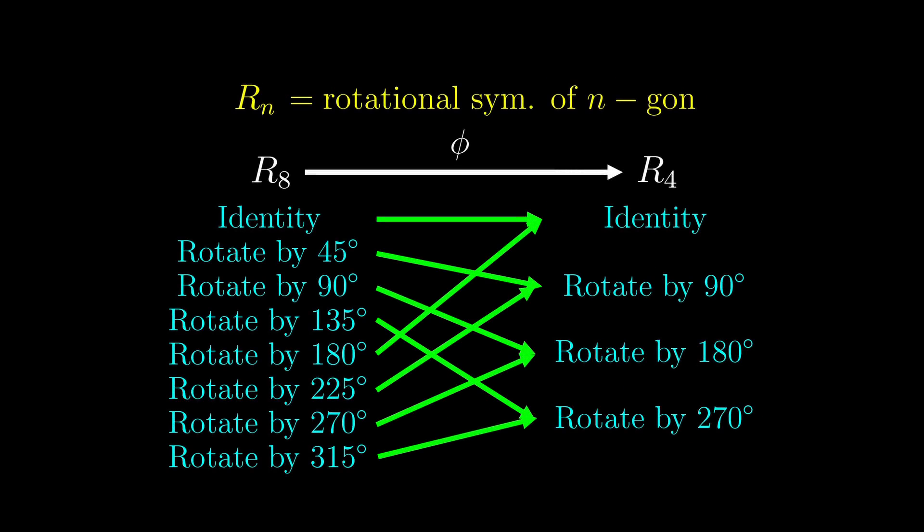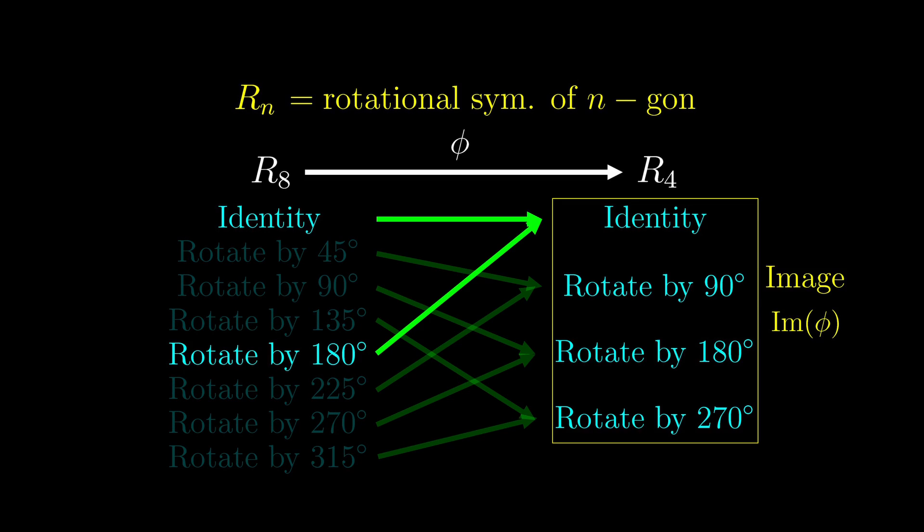Let's revisit this homomorphism again. As with all functions, we can define the image of this function phi, which is something that is hit by the function. This is usually denoted as im of phi. Another thing we are interested in is what symmetries on the left get mapped to the identity on the right. In this case, there are two symmetries. This set of symmetries is called the kernel, denoted as ker of phi. We can also define the kernel and image in a general homomorphism.